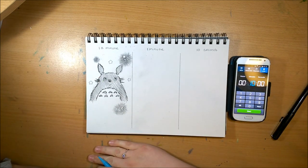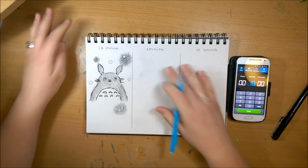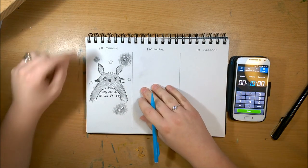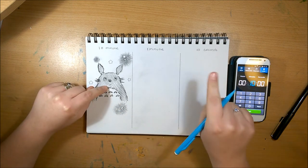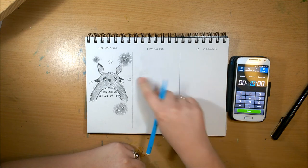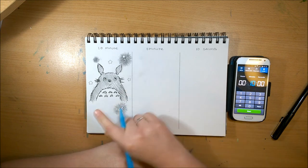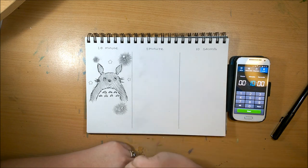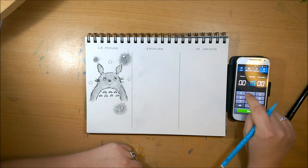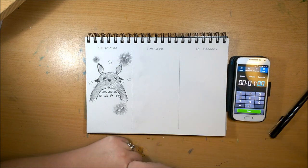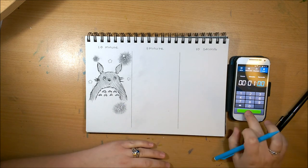There we go, that's the ten-minute one. I think I'm going to focus on just getting Totoro himself done for the next two, and if I have time - which I know I definitely won't for the 10 seconds but maybe in the minute one - I'll try and do the soot sprites and the little starry flower shapes. But Totoro will be the main focus. Let's reset this to one minute and get started.